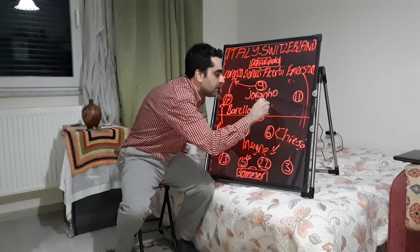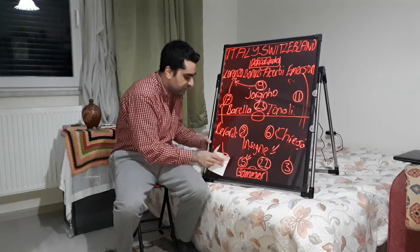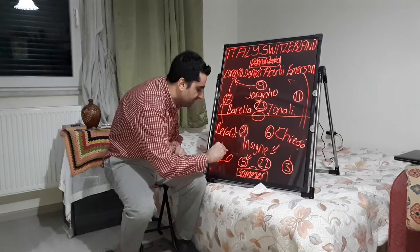Switzerland made their first substitution with left back Rodriguez coming off, replaced by Garcia, number 20, who took the left wing back position.